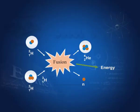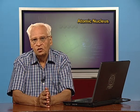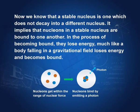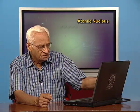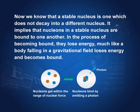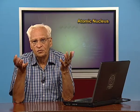Today we discuss again the stability of the nucleus. We shall now quantify the stability of the nucleus. A stable nucleus is one which does not decay into a different nucleus. It is obvious that nucleons in a stable nucleus are bound to one another. There are four nucleons in this nucleus and if they are bound together, the nucleus would be stable; otherwise it would be unstable.